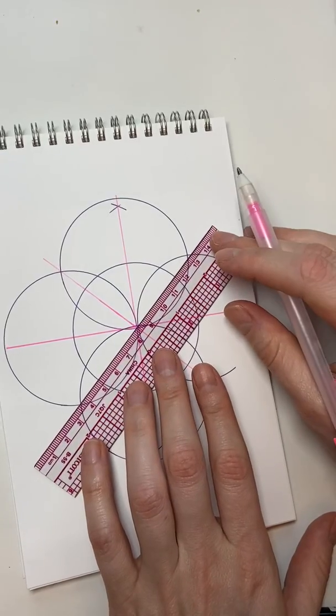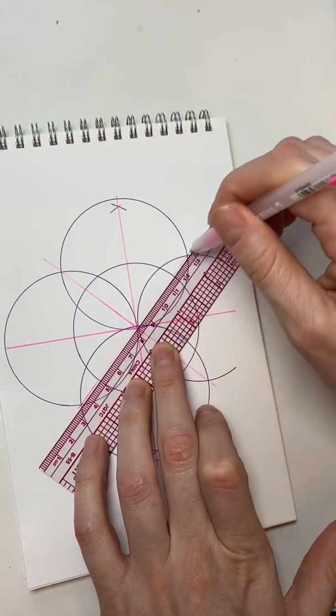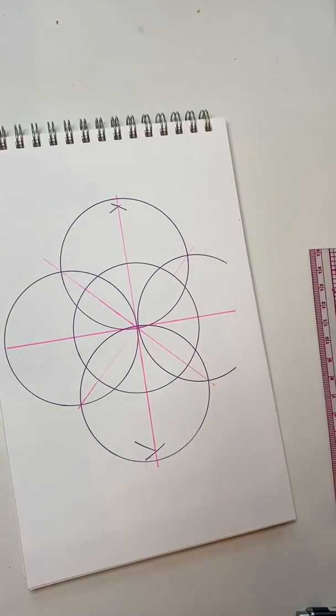And then we're going to connect, so we're going to divide that original circle into eight equal pieces by connecting like that, point to point, and that point, the intersections of those neighboring circles.